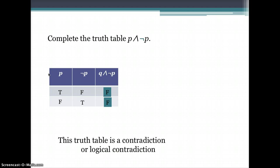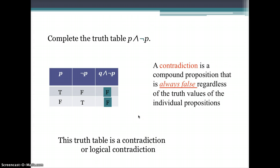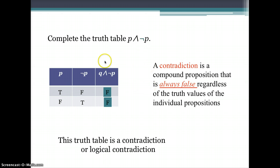This truth table is an example of a logical contradiction. A contradiction is when a compound proposition is always false regardless of the truth values of the individual propositions. We will revisit this concept later on.